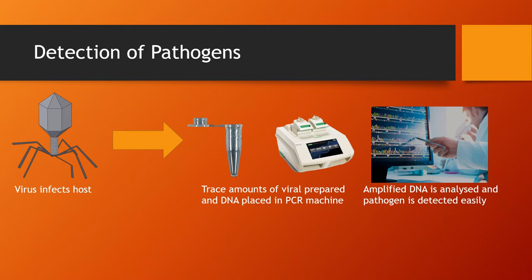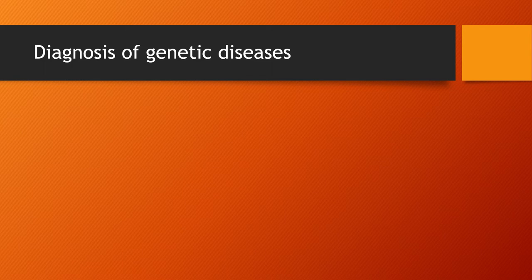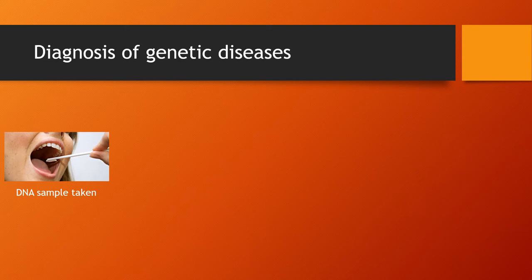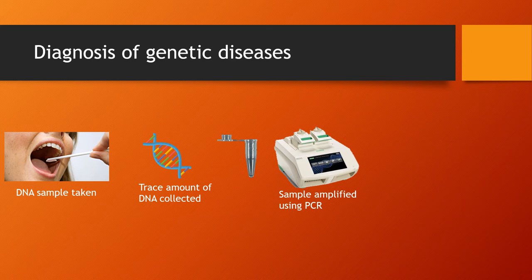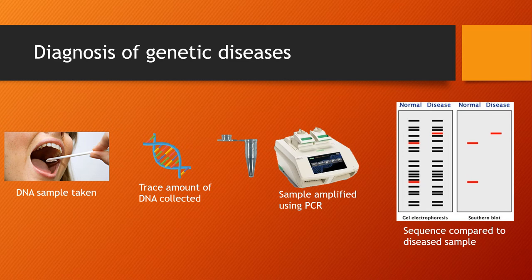The last use of PCR I'll talk about is the diagnosis of genetic diseases. This process is quite similar to the first application I've discussed. First, a DNA sample is taken from the patient, but as before, this sample is too small to analyze effectively and PCR will be needed. The DNA sample undergoes a polymerase chain reaction resulting in plenty of identical DNA. This DNA is put through gel electrophoresis to sequence it, giving us a clear depiction of the patient's DNA. This sequence is compared to the sequence of a diseased individual, and if there are similarities, then the patient is at risk of having that disease.